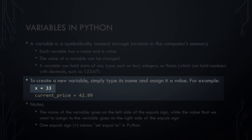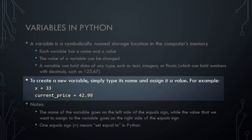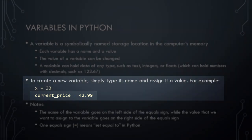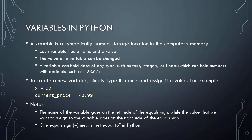In this second example, we're declaring a variable named currentPrice and assigning it a value of 42.99. Note that the name of the variable goes on the left side of the equal sign, while the value that we want to assign to the variable goes on the right side of the equal sign. Also note that one equal sign means set equal to in Python. Thus, x equals 33 means set a variable named x equal to the value 33.